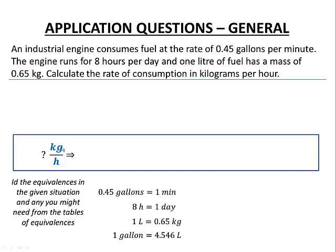Because I want kilograms per hour and I have gallons as one of my equivalences, I need to be able to get rid of those gallons. I chose an equivalence that has gallons in it, and also one with liters, because I have a given equivalence between liters and kilograms. So my gallons and liters should both disappear.